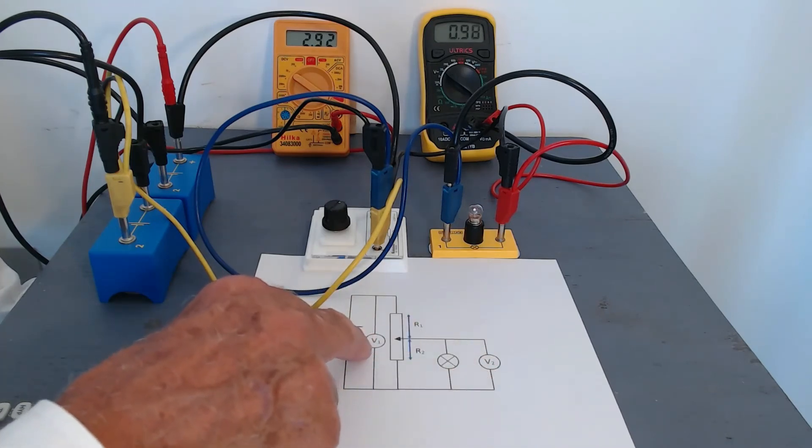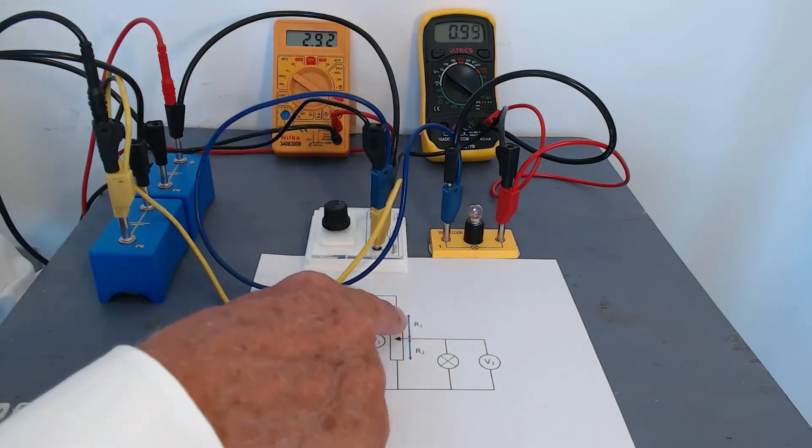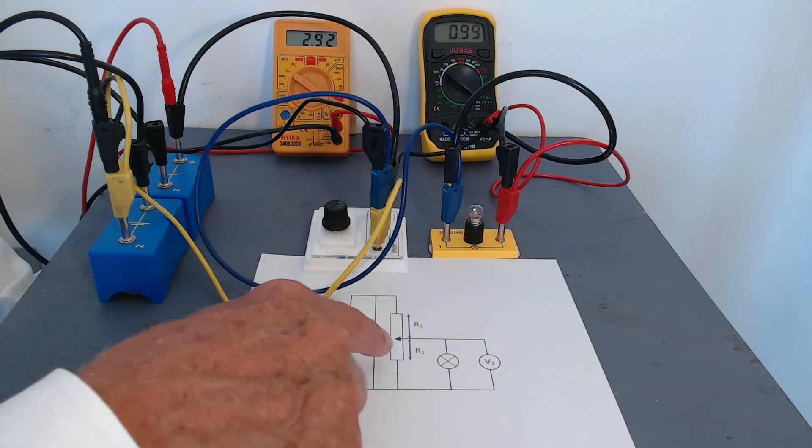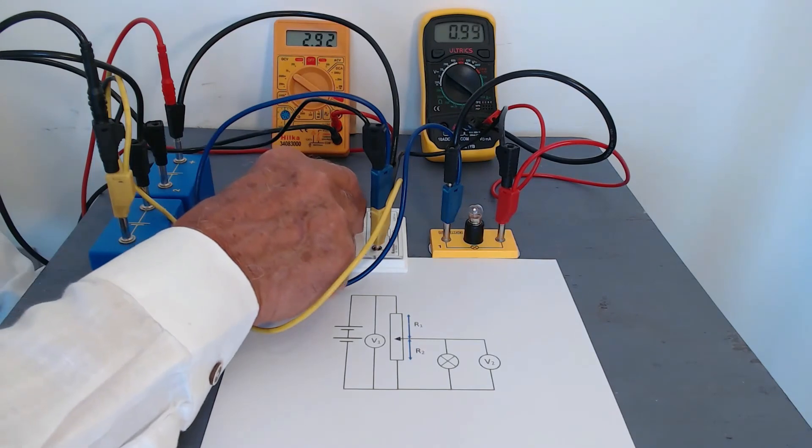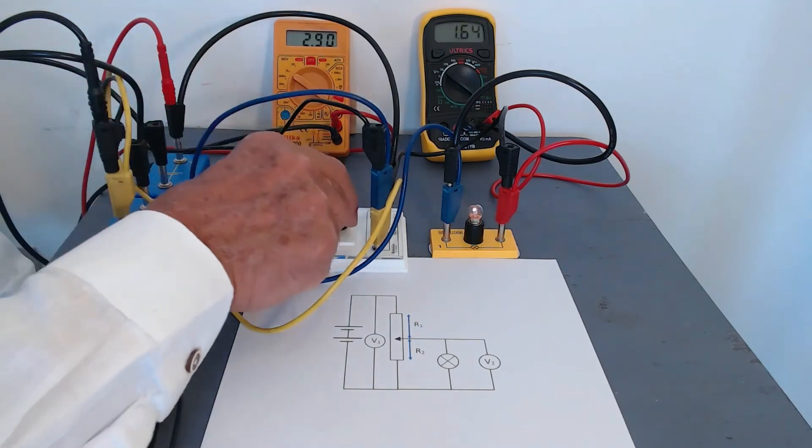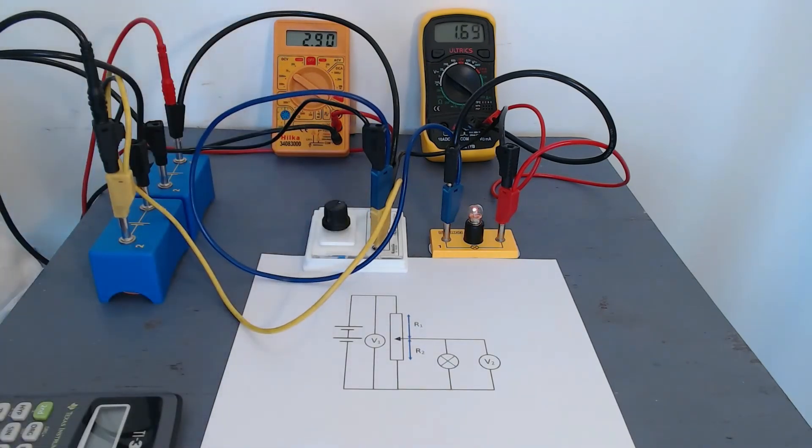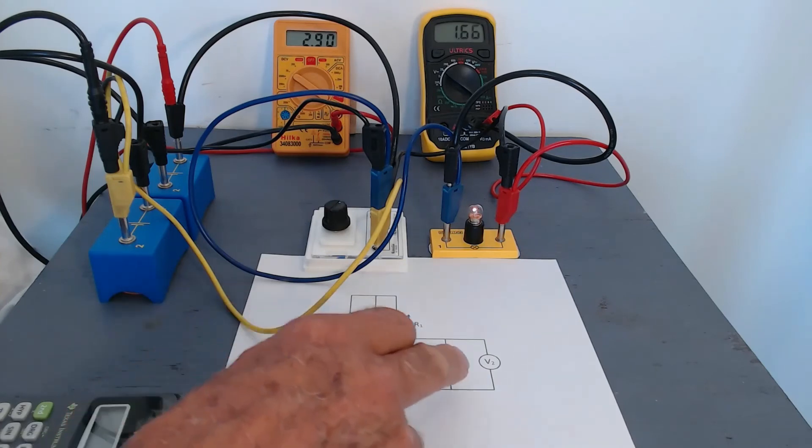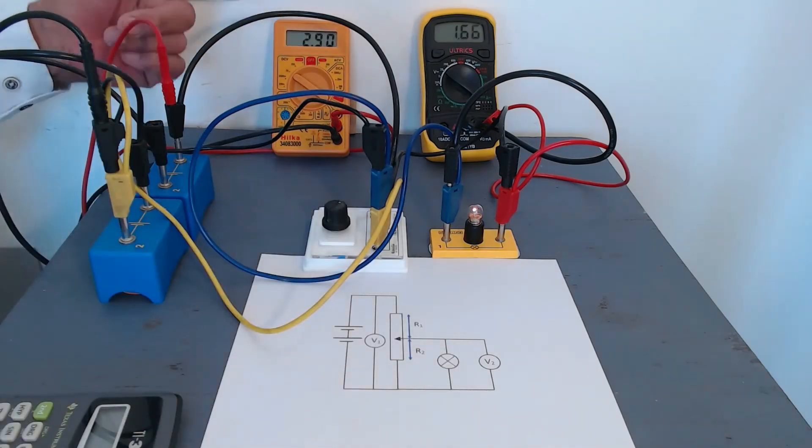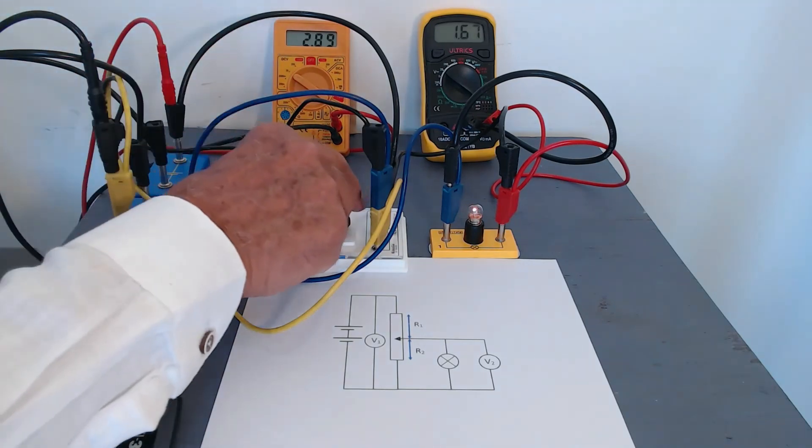If I now move the sliding contact a little bit more, well we're slightly over half of that now. So now we've still got the same proportion, R2 over R1 plus R2 multiplied by V1, and that comes to 1.66 volts. And that is a little bit more, admittedly, than half of this. Well let's go on.